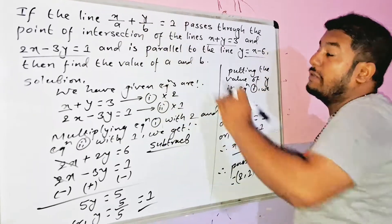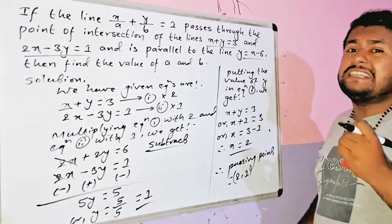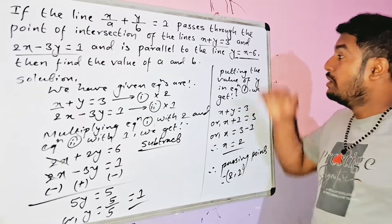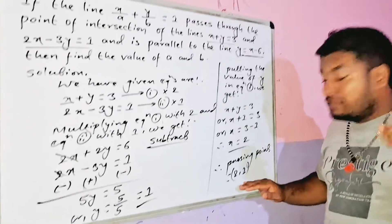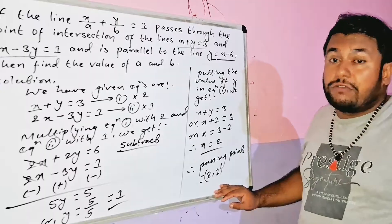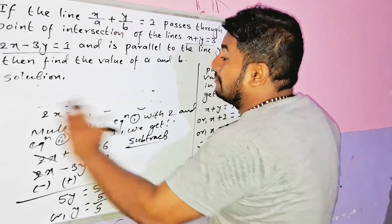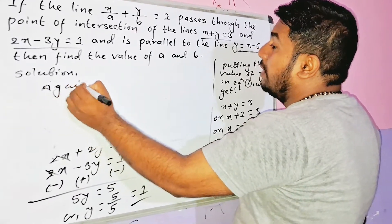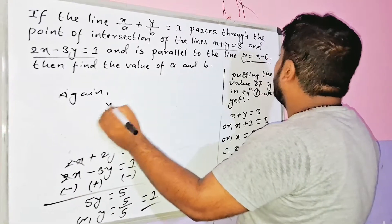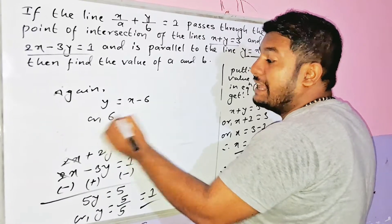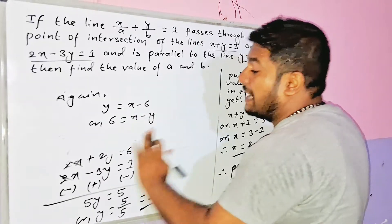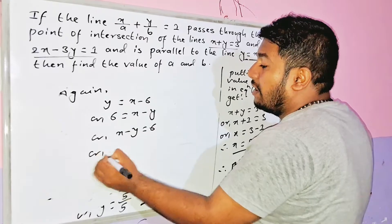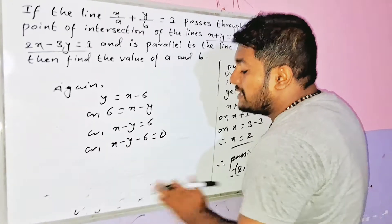So the line x/a + y/b = 1 passes through the point (2, 1). Now the line is also parallel to y = x - 6. We rewrite y = x - 6 as x - y - 6 = 0, or x - y = 6.